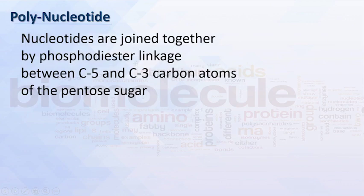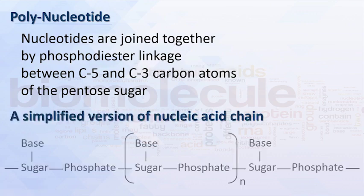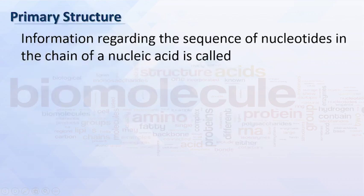Polynucleotide: nucleotides are joined together by phosphodiester linkage between carbon-5 and carbon-3 of the pentose sugar. A simplified version of a nucleic acid chain shows a sugar attached to a base forming a nucleoside, which is then attached to another nucleoside using a phosphate unit. The sequence of nucleotides in the chain of a nucleic acid is called its primary structure.